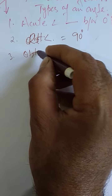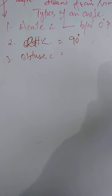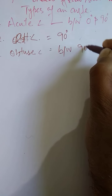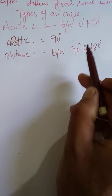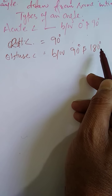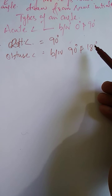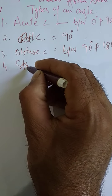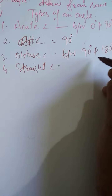Number three is the obtuse angle. An obtuse angle is the angle whose measure lies between 90 degrees and 180 degrees — greater than 90 but lesser than 180. This is the obtuse angle.